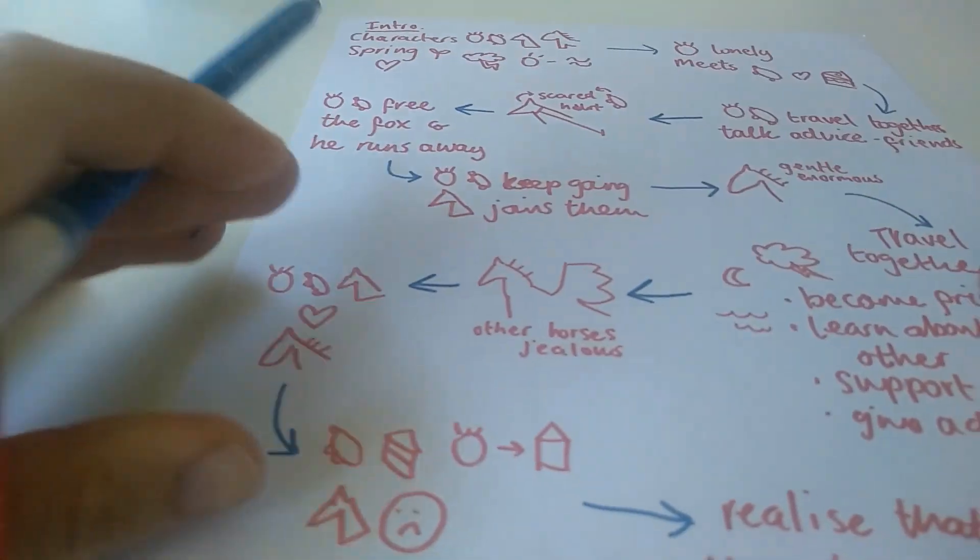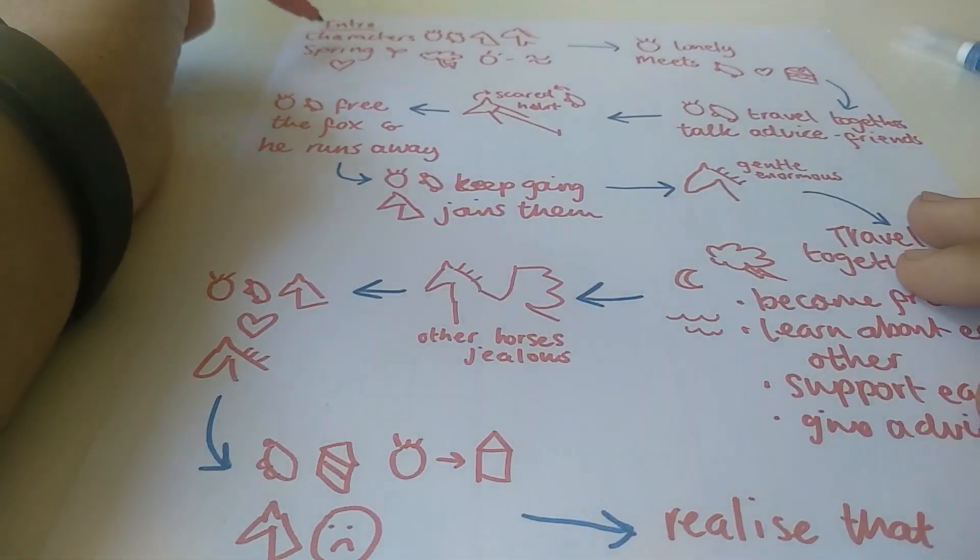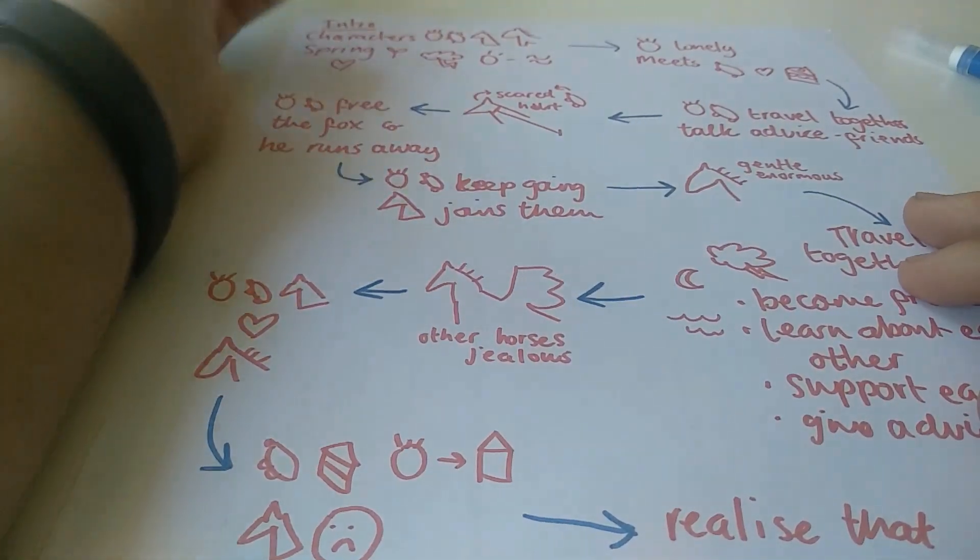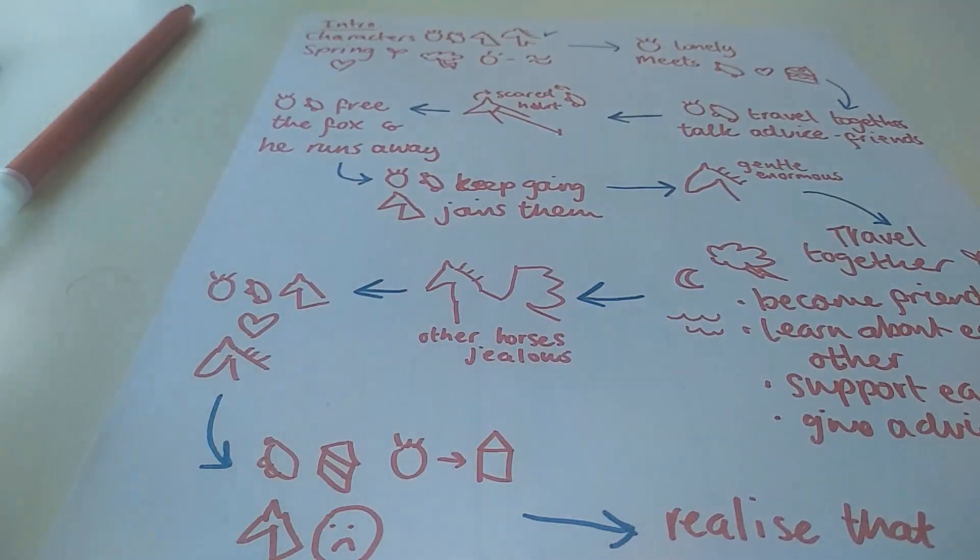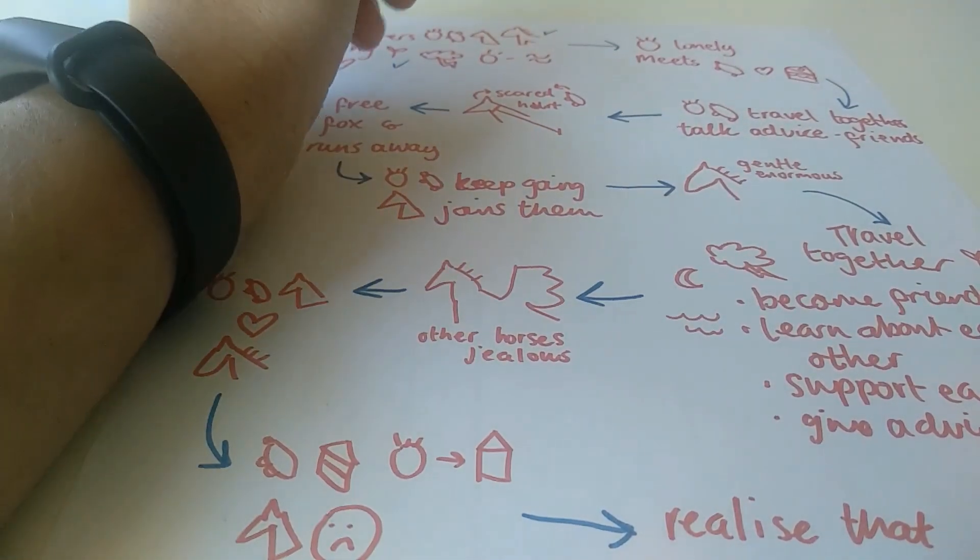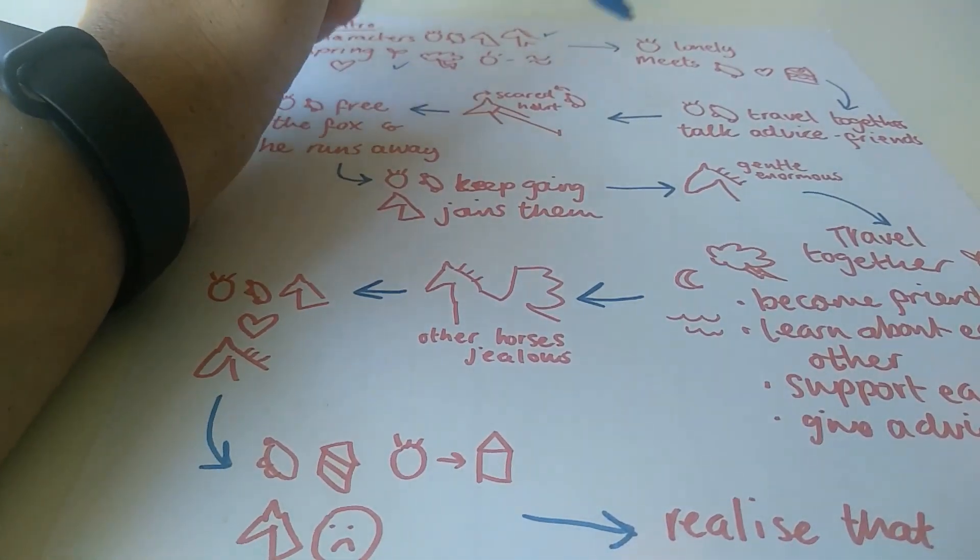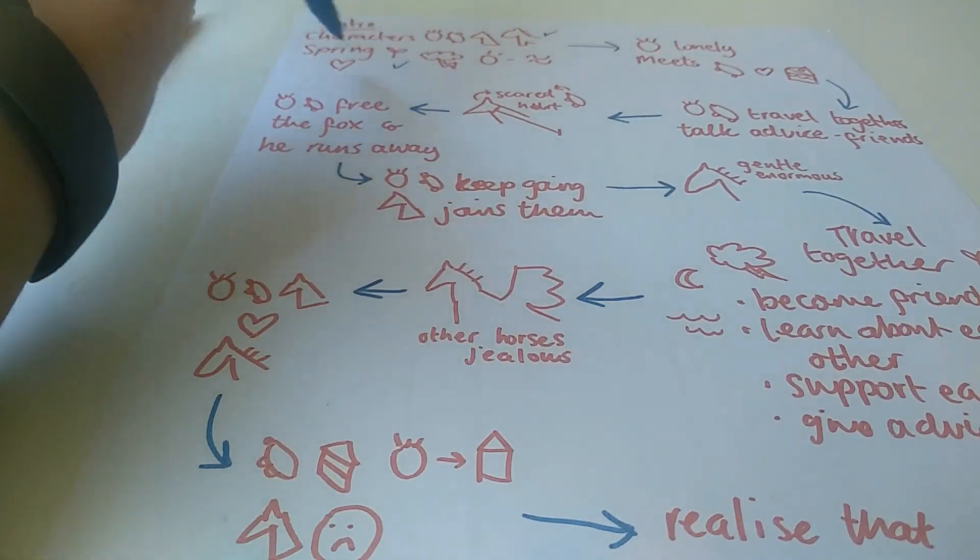So now I've got all the main points down. And as I'm going through and doing my retell, I might want to refer back to this. So once I've introduced the characters, I could perhaps even tick that off. And once I've mentioned that it's springtime, I could tick that off. And maybe each time I have an arrow could be a new paragraph because it's a new idea.